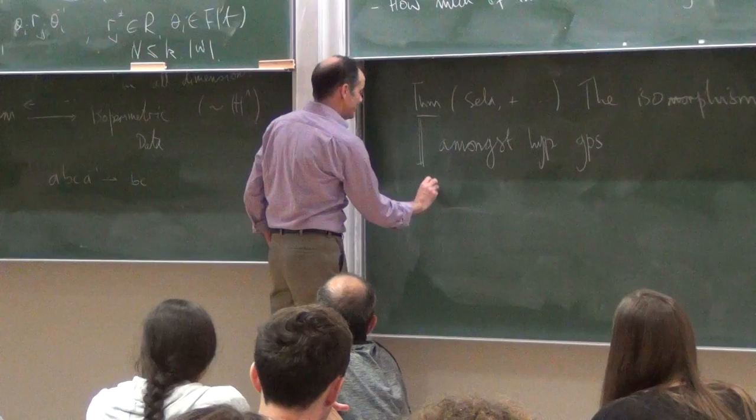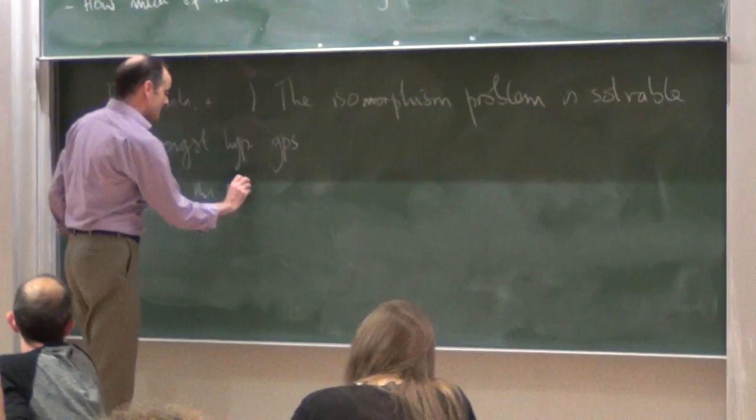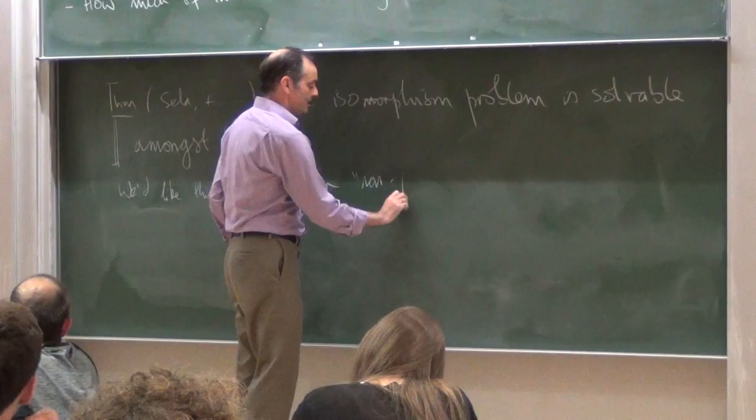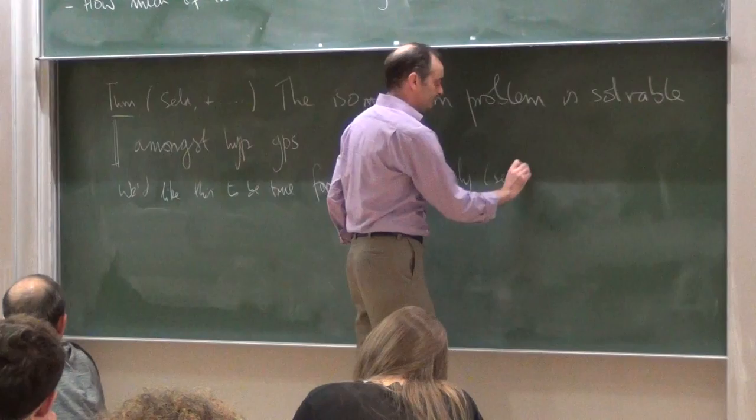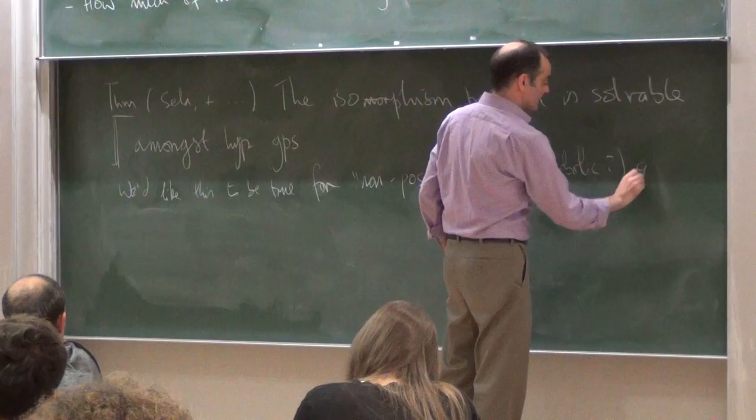When you say the isomorphism problem is solvable amongst a class of groups, that means somebody gives you two groups and says 'I promise you these groups are in the class.' Then you'll go away and come back with the answer. If they lied to you, that's their problem. The answer might be wrong, or you might never come back. What it means is, as long as they gave you two hyperbolic groups, you can answer whether they're isomorphic or not.